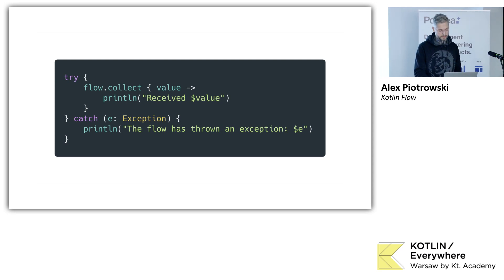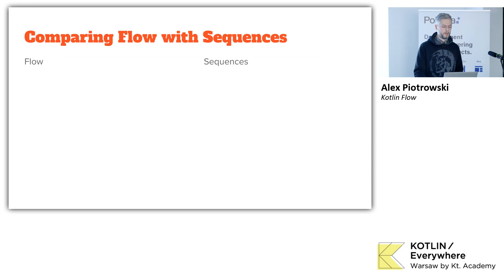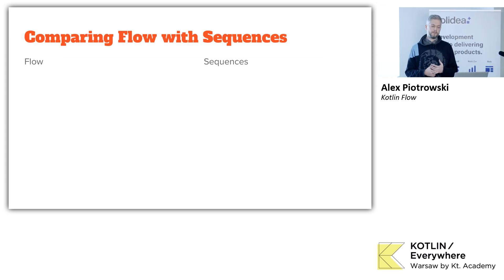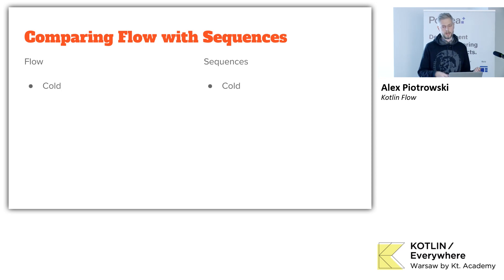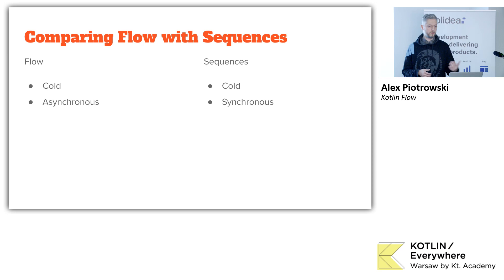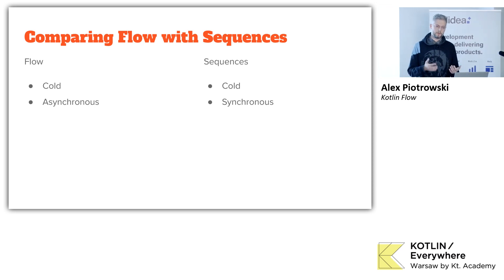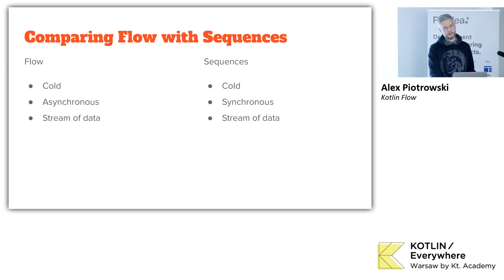This is also true for RxJava, by the way. The way to think about flow — for me, to understand flow was to compare it with sequences from Kotlin. Basically they're the same thing. Both things are cold. The difference is that flow is asynchronous thanks to coroutines, and sequences are not asynchronous — they will just be run on the current thread above our stream of data.